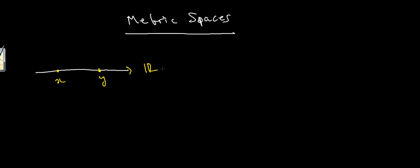So how do we find the distance between these two points x and y? Well we know that it's the absolute value of x minus y. It could just be y minus x, but we want the distance to always be positive, so that's why we need the absolute value signs.